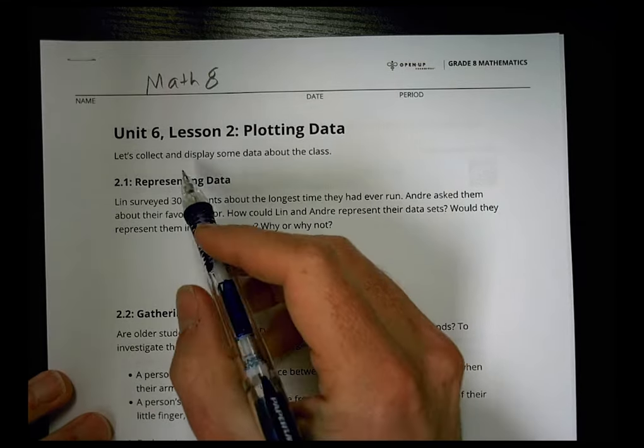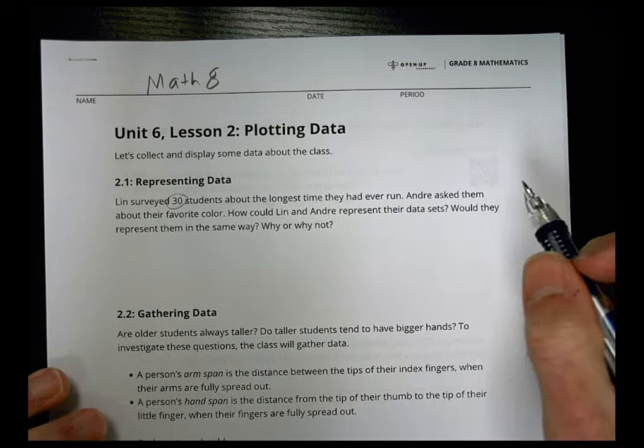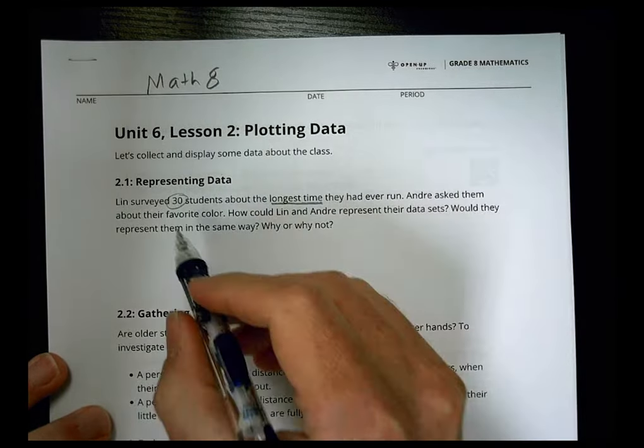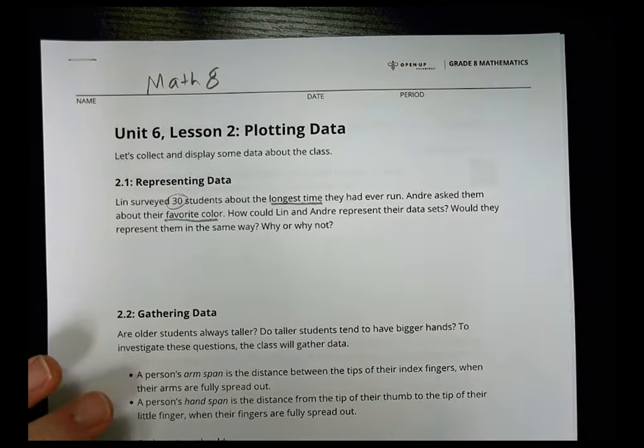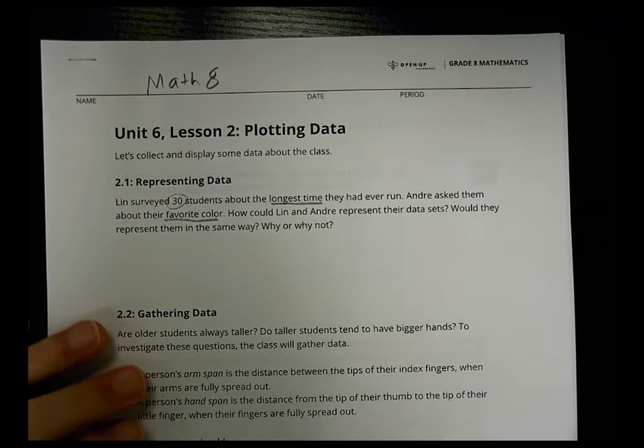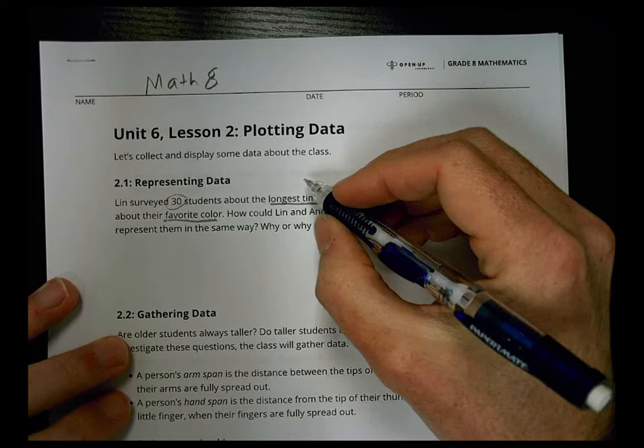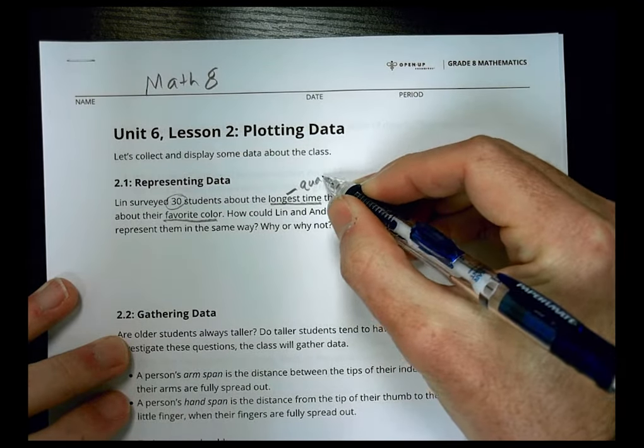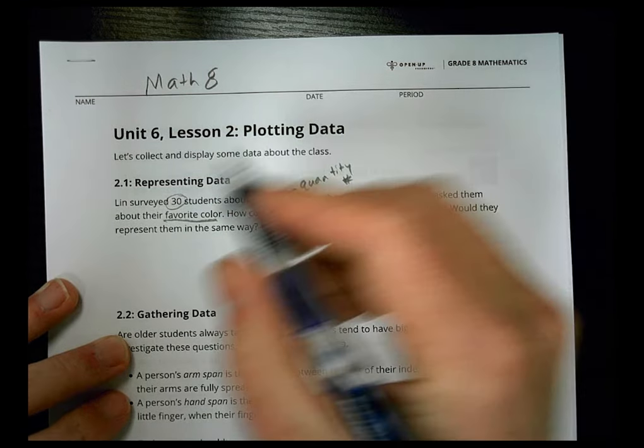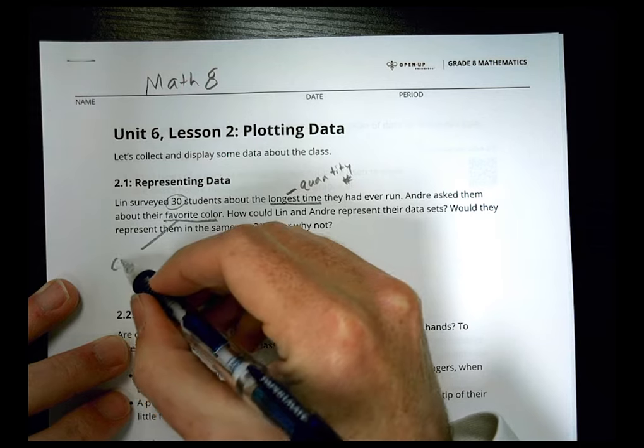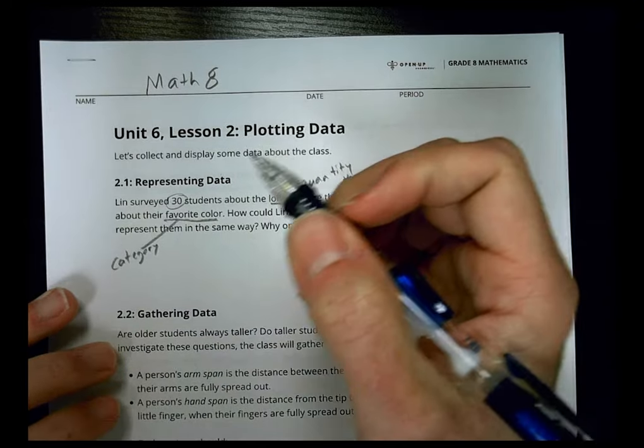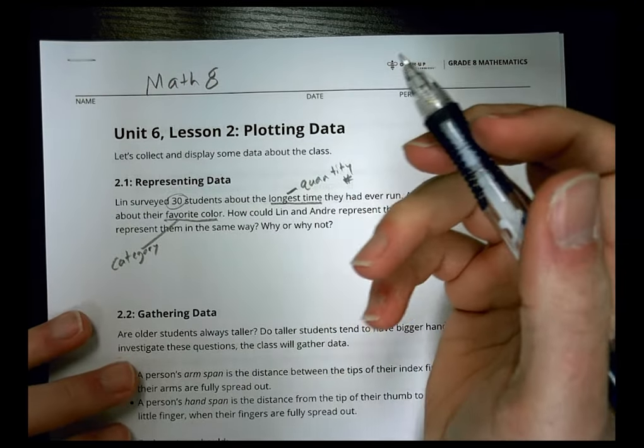Lynn surveyed 30 students about the longest time they had ever run. Andre asked them about their favorite color. So we have the longest time they've run and their favorite color. How could Lynn and Andre represent their data sets? Would they represent them in the same way? Why or why not? Well, they're asking about two different things. When you're talking about longest time, you're talking about a quantity, an amount, a number. When you're talking about a favorite color, you're talking about what we call a category. That's not a number value. It's just what's your favorite color, red, blue, green.